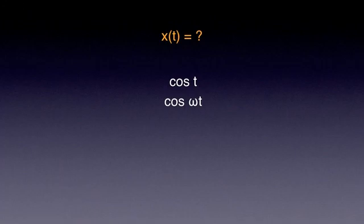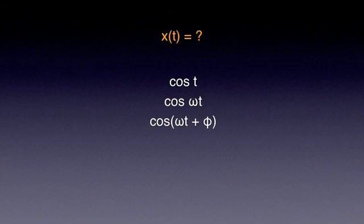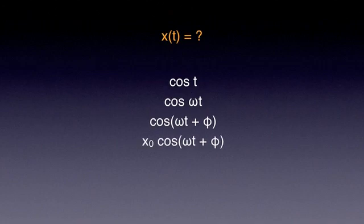In addition, the oscillation can start at any position, and at t equals zero the displacement can have different values. To account for that, I'm introducing another constant phi, so when t equals zero the displacement can be non-zero: cosine of omega·t plus phi. Of course, the cosine function can only have values between plus one and minus one, but the displacement can have any value. Therefore I'm introducing another constant x₀ in my solution: x(t) equals x₀ cosine(ω·t + φ).